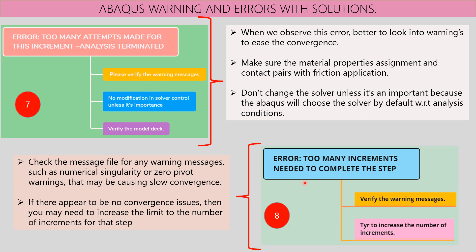The eighth and last warning is 'Too many increments needed to complete this analysis step.' For this error, verify the warning messages as described before. Sometimes you may need to increase the number of increments. Check the message file for warnings such as numerical singularity or zero pivot, which may be causing slow convergence. If non-convergence issues appear, increase the limit on the number of increments for that step to avoid this error.